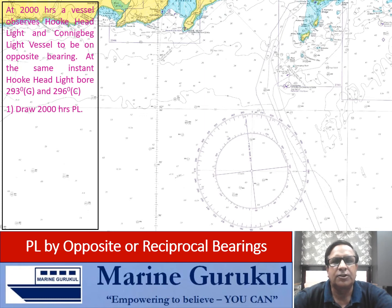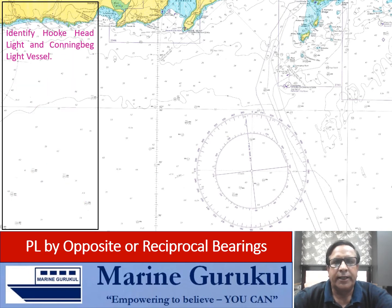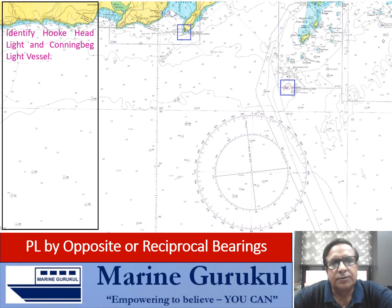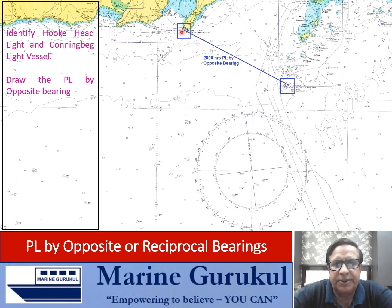Draw the 2000 hours PL, obtain the error of the gyro compass and the error of the standard compass. If variation is 3 degrees west, find the deviation for the ship's head at that time. On the chart, this one is Hook Head light and this one is Conning Baked light vessel. We now draw the 2000 hours PL by joining these two points. You can see this blue segment joining these two points is the 2000 hours PL.